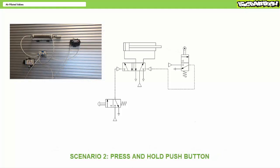Scenario two: priority. Sometimes you don't want extension followed by immediate retraction — sometimes you want to extend and hold for a bit before retracting. To allow this functionality, press and hold push button one. This works because the air piloted valve exhibits priority: when the operator holds push button one down, the air pilot on the left-hand side remains pressurized. Even if the roller is struck and sends a pilot signal to the right-hand side, the double air piloted valve remains in the extension position because the left-hand pilot was pressurized first, giving it priority and effectively ignoring the roller valve input. Only when the operator releases push button one will the left pilot be exhausted, allowing the right pilot to shift the spool to allow retraction.